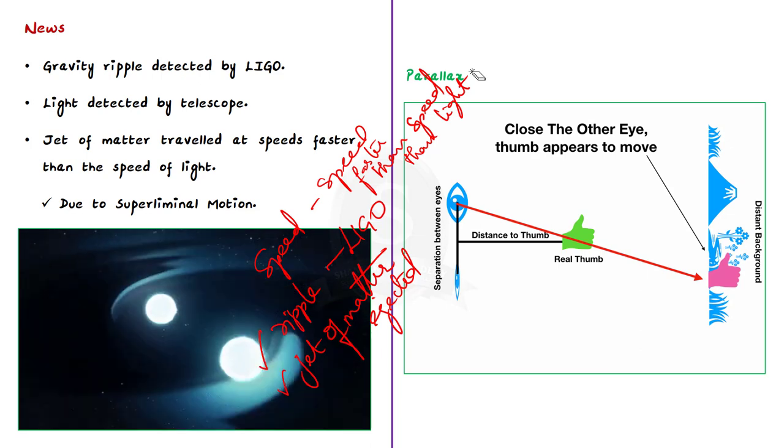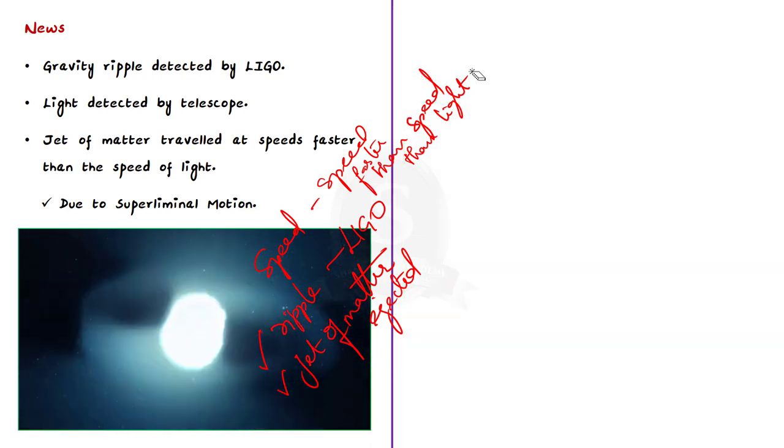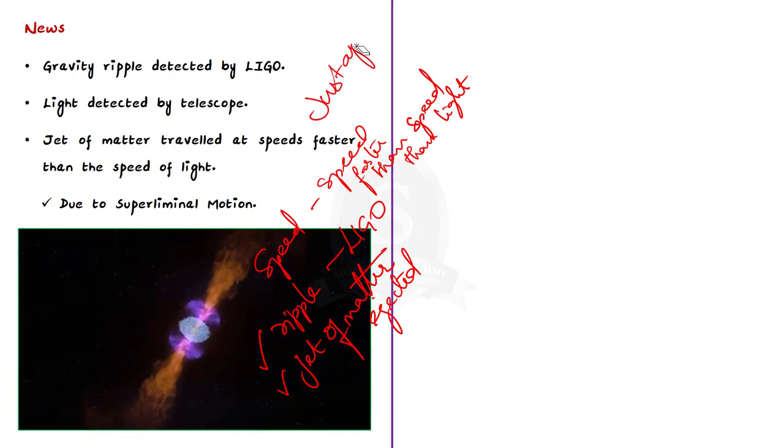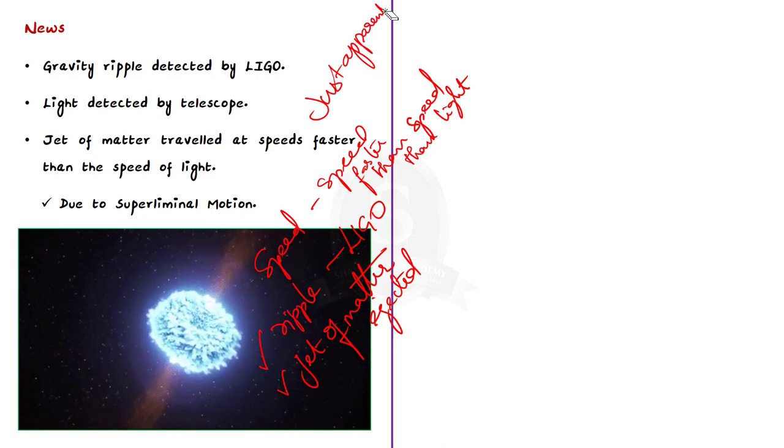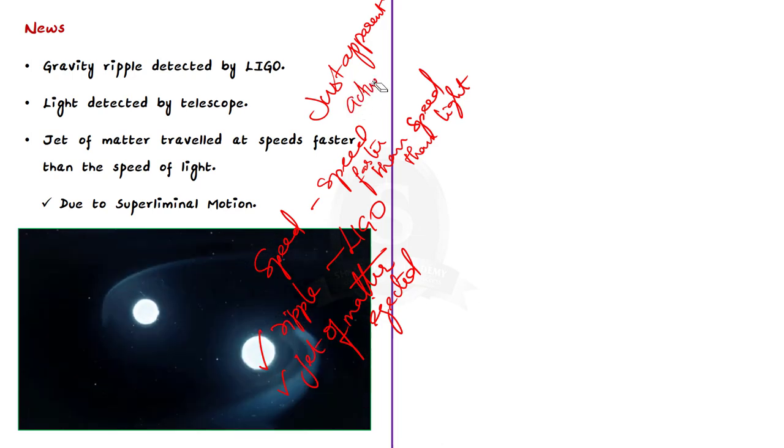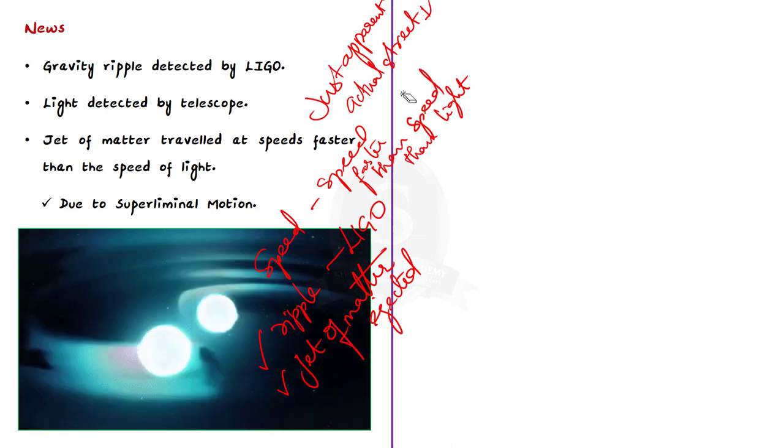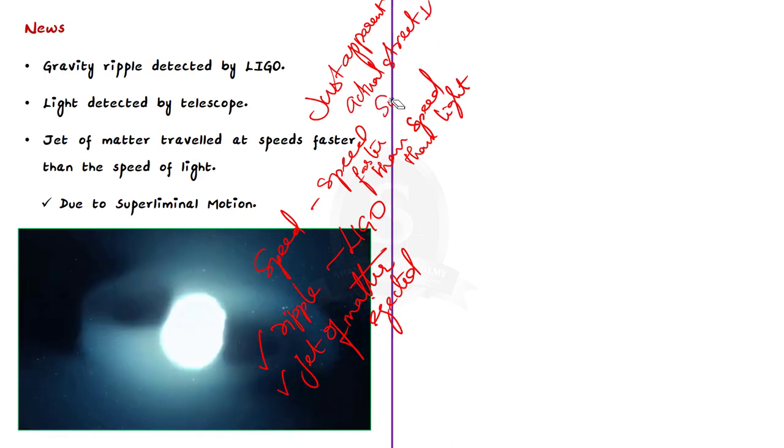Because we know that no object in the universe can travel at speeds faster than the speed of light. But right now, after further research, physicists have found that it is just the apparent speed of the jet that was traveling faster than the speed of light, but its actual speed was lesser. This is due to the phenomenon of astrophysics called superliminal motion.